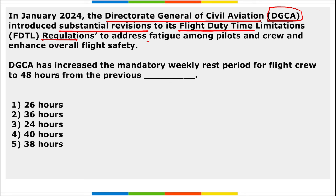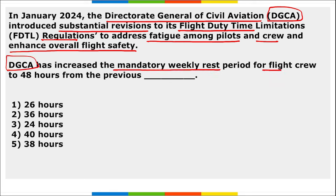DGCA — Directorate General of Civil Aviation — introduced substantial revisions to its Flight Duty Time Limitations regulations to address fatigue among pilots and crew and enhance overall flight safety. DGCA has increased the mandatory weekly rest period for flight crew to 48 hours from the previous 36 hours.